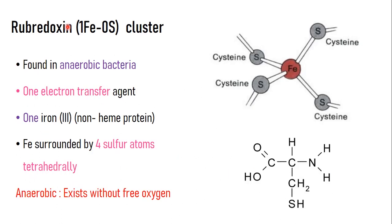Coming to rubredoxin — we can also call it a 1Fe0S cluster. The zero means there are no labile sulfur atoms (even though four sulfur atoms are present, they are not labile — this will be explained shortly). Rubredoxin is present in anaerobic bacteria. Anaerobic refers to organisms that exist without free oxygen, unlike aerobic organisms like us that need oxygen to live.